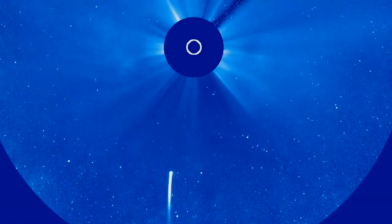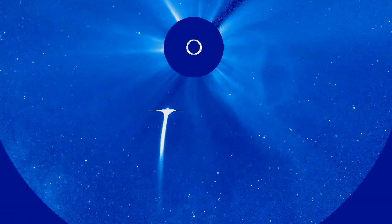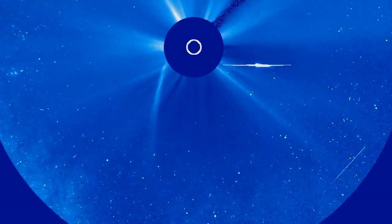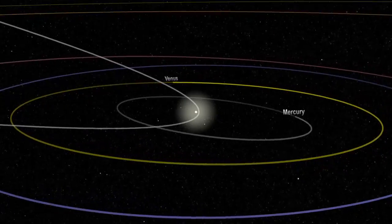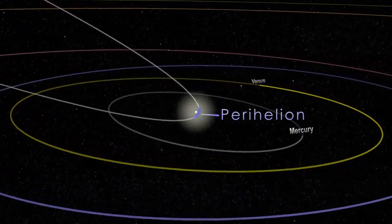All the comets that we can see from Earth are orbiting the Sun, but some belong to a special group called sungrazing comets. Sungrazers are comets that come very close to the Sun at their nearest approach, a point called perihelion.